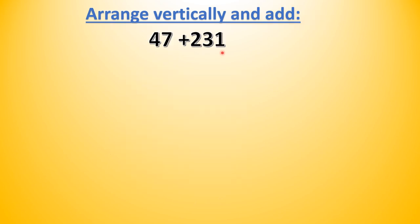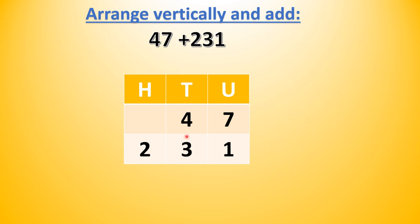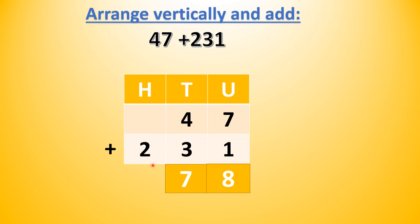47 plus 231. In 47 we have 4 tens and 7 units. Let us write the place values — hundreds, tens, and units. We write 4 in the tens column and 7 in the units column. In 231 we have 2 hundreds, 3 tens, 1 unit — so we write 2 in the hundreds column, 3 in the tens column, 1 in the units column. We write the addition sign. 7 units plus 1 unit gives 8 units. 4 tens plus 3 tens gives 7 tens. 0 hundreds plus 2 hundreds gives 2 hundreds. So 47 plus 231 gives us 278.